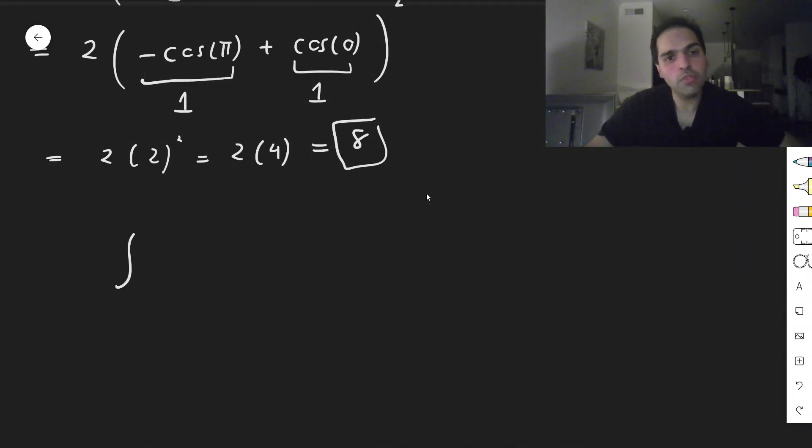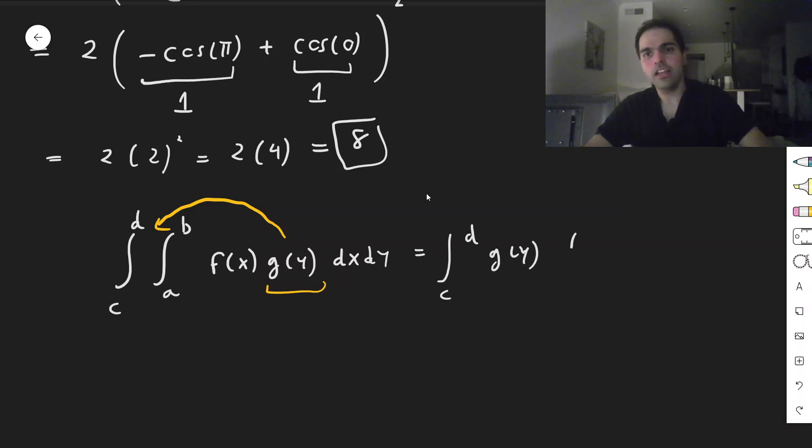So, how come? So, in other words, what's the integral from a to b and then c to d of f of x g of y dx dy? Now, notice, g of y, that's just a constant with respect to x. So, it comes out. And then, what we get is integral from c to d, g of y, integral from a to b, f of x, dx dy.